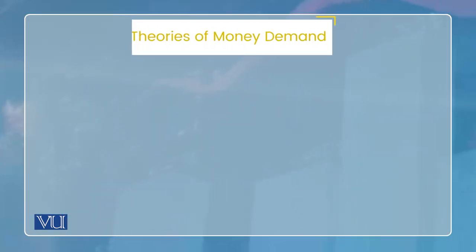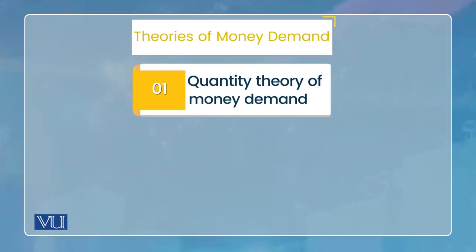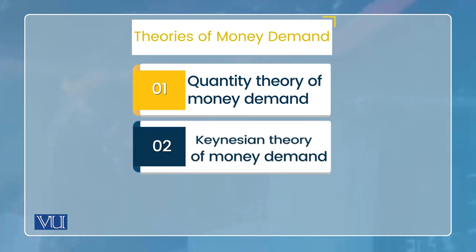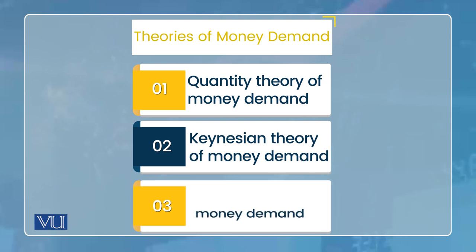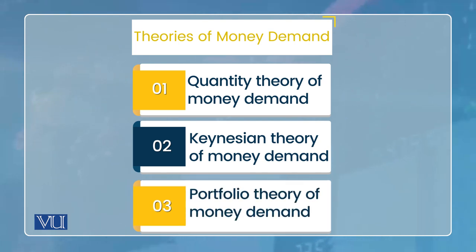اب جو theories money demand کی ہیں ان میں سب سے پہلے quantity theory of money demand ہے، پھر Keynesian theory of money demand ہے، اور پھر portfolio theory of money demand ہے۔ یہ تین broader theories ہیں اور ان کے ساتھ دو extensions بھی ہیں جو آگے discuss کروں گا، تو یہ total پانچ theories بن جائیں گی — main three ہیں اور دو extension کے طور پر آئیں گی۔